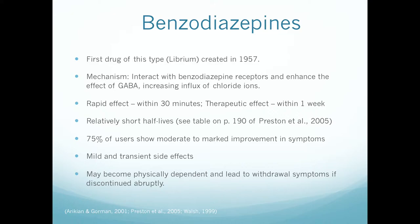This is a bit of history, and one thing to point out is that benzodiazepines have a relatively wide therapeutic index. The dose needed for effectiveness in 50% of the population is very far from the dose that causes toxic or lethal effects in 50%. They also have a very good outcome: 75% of users show at least moderate to very marked improvement — three out of four patients.